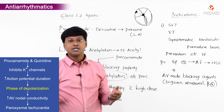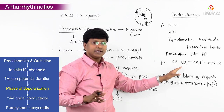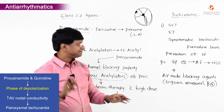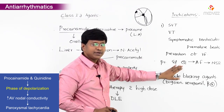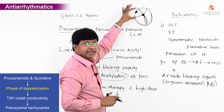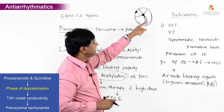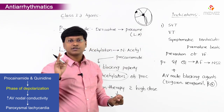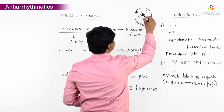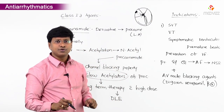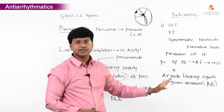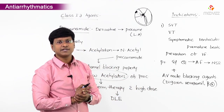Procainamide and quinidine block potassium channels, increasing action potential duration and keeping the cell in a phase of depolarization. This allows fibrillating atria to send impulses through the AV node into the ventricle, resulting in paroxysmal tachycardia. To avoid this, you block the AV node using AV nodal blocking agents: digoxin, verapamil, and beta blockers.